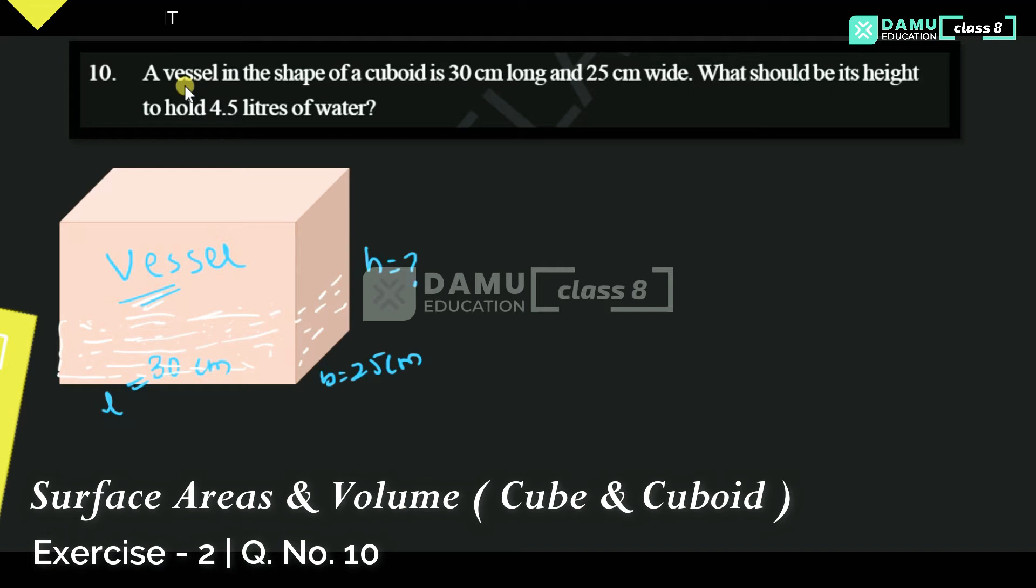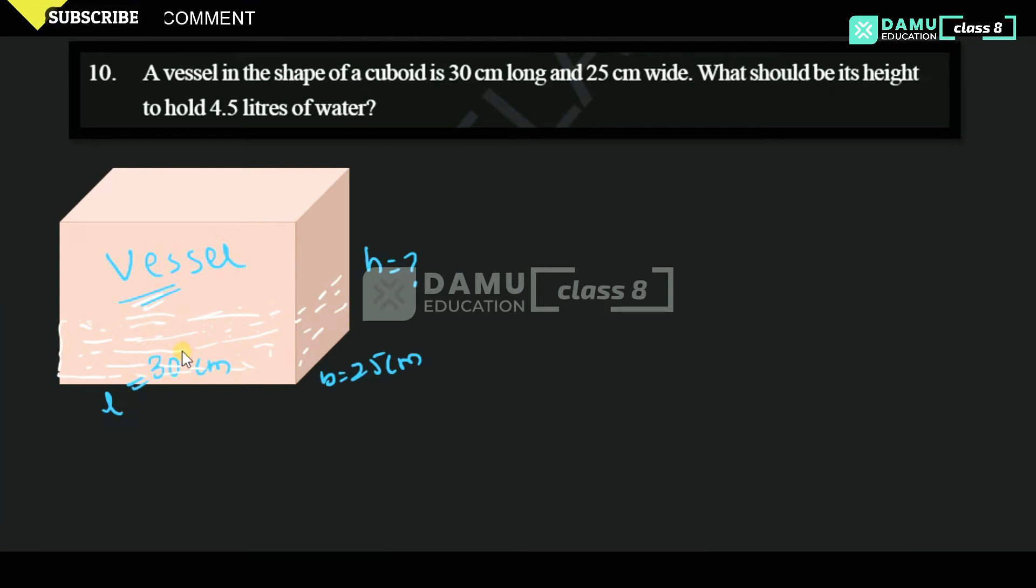Here in this module, we are going to discuss the last question in this chapter. A vessel in the shape of a cuboid - length is 30 cm and width is 25 cm. What should be its height to hold 4.5 liters of water?